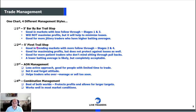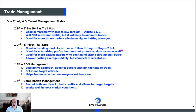Second, we're going to go over a five-minute pivot trail. This is very good in trending markets with more follow-through — stages two and four — where we expect markets to keep continuing in that stage. It's good for maximizing profits but does not protect against losses nearly as well, because you have to wait for a pivot to form. Waiting for a pivot can take a long time, leaving you more exposed but allowing for larger targets. It's good for patient traders who don't mind sitting through pullbacks. A slightly lower batting average is likely but completely acceptable.